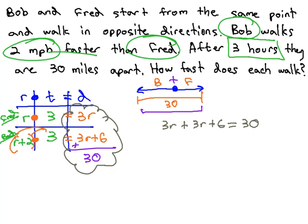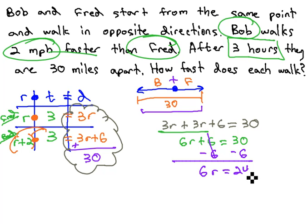We can now solve this equation quickly by combining like terms, 6R plus 6 equals 30, and solving the two-step equation. Subtract 6 from both sides to give us 6R equals 24, and finally, divide by 6 to give us R equals 4.